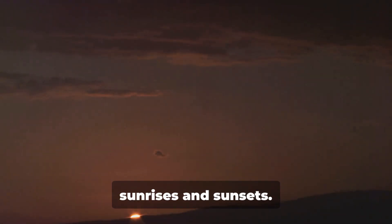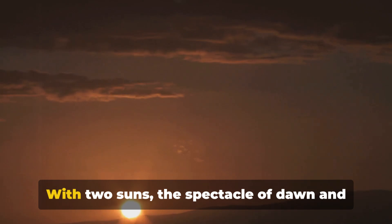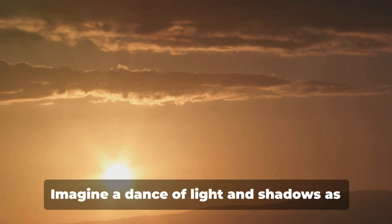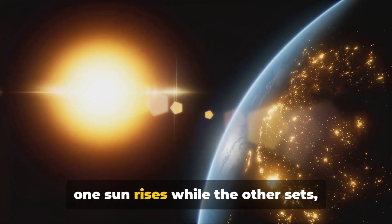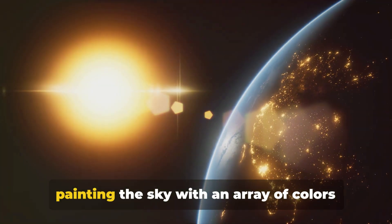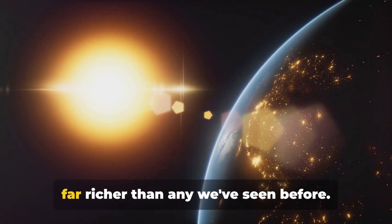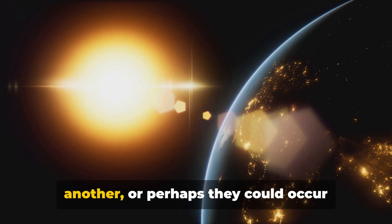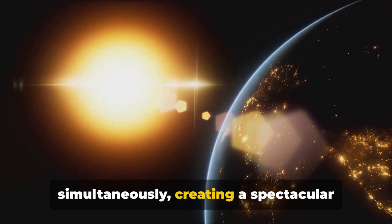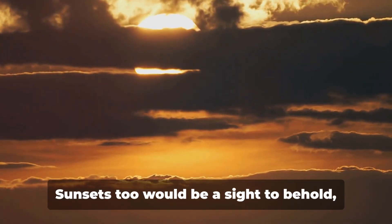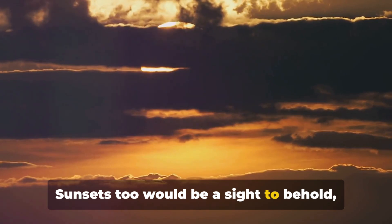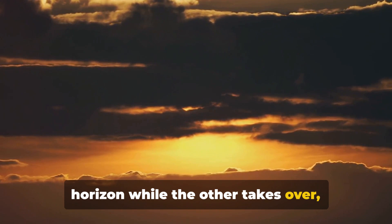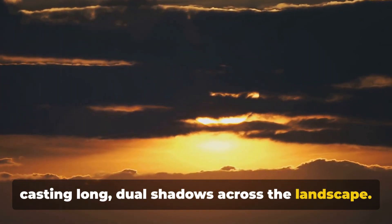Now let's talk about the magic of sunrises and sunsets. With two suns, the spectacle of dawn and dusk would be completely redefined. Imagine a dance of light and shadows as one sun rises while the other sets, painting the sky with an array of colors far richer than any we've seen before. A sunrise could be followed shortly by another, or perhaps they could occur simultaneously, creating a spectacular double dawn. Sunsets too would be a sight to behold, as the light from one sun fades into the horizon while the other takes over, casting long dual shadows across the landscape.